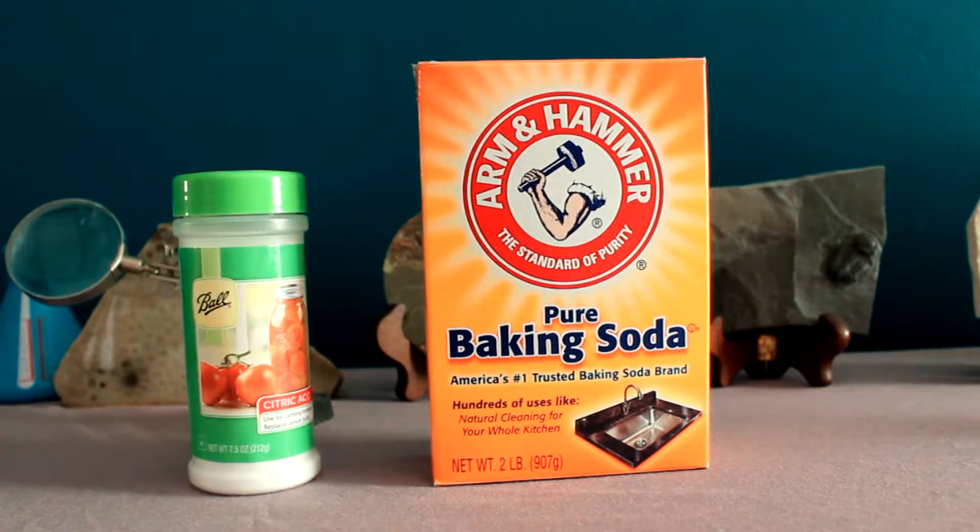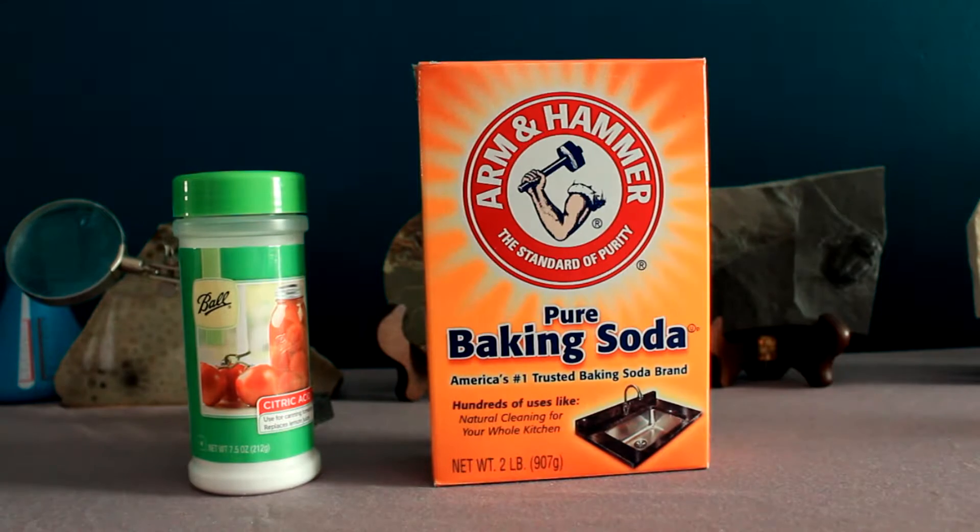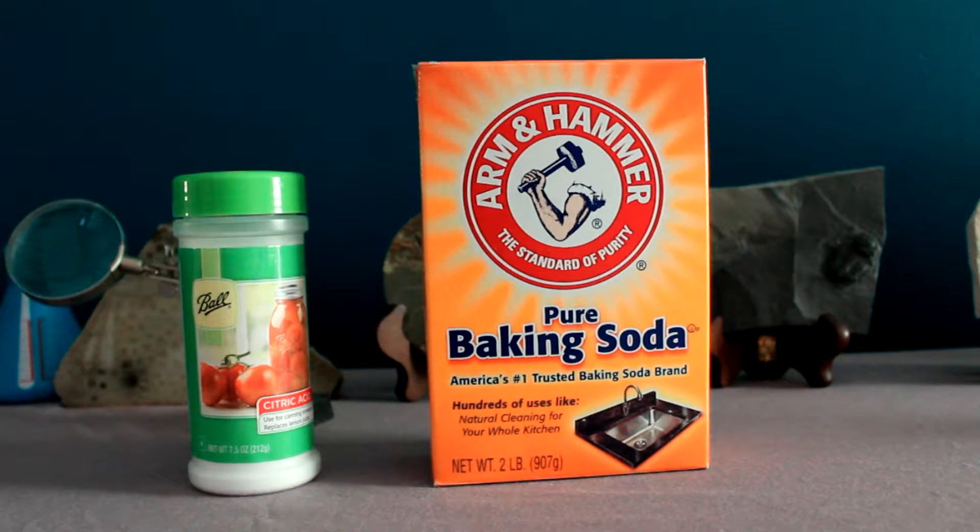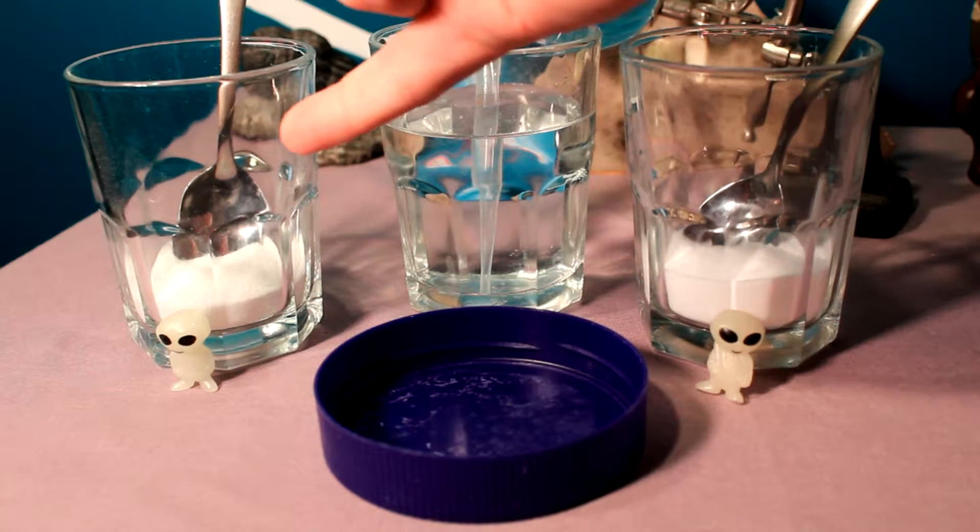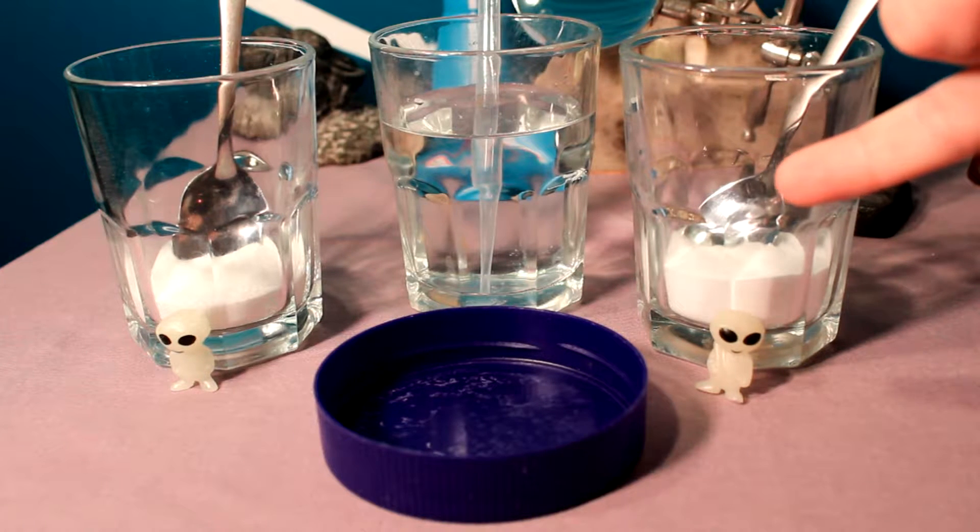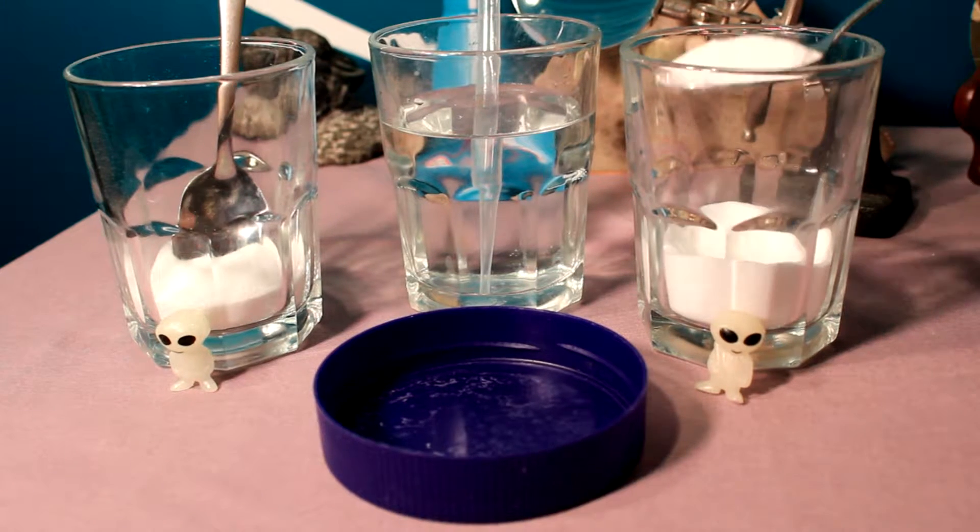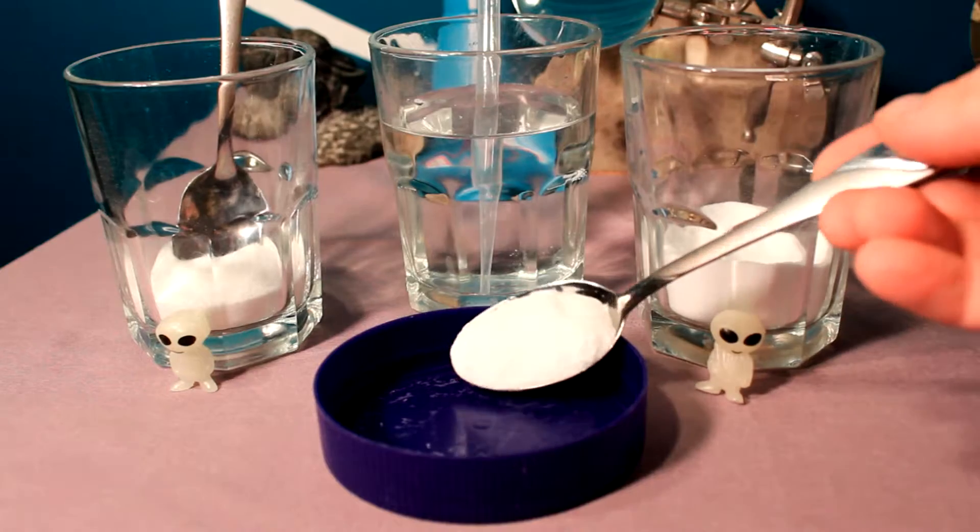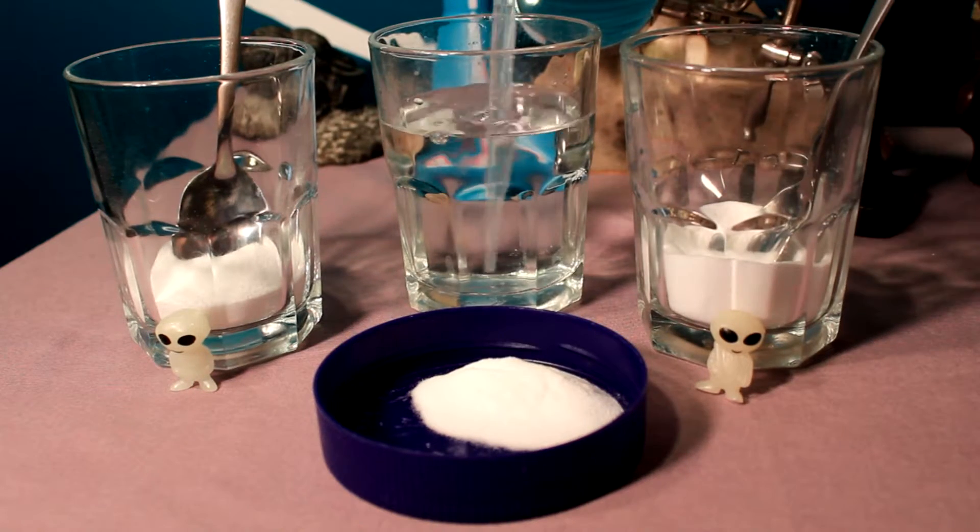Here we have two household chemicals, citric acid, used in canning, and baking soda, which has the chemical name sodium bicarbonate. And here the chemicals are again. Citric acid, baking soda, sodium bicarbonate. Let's take some of that baking soda, and let's see what happens when we add some water.